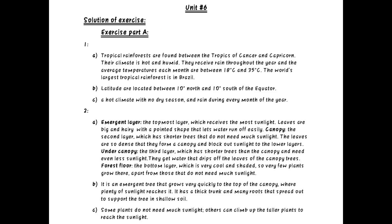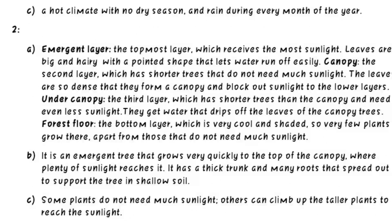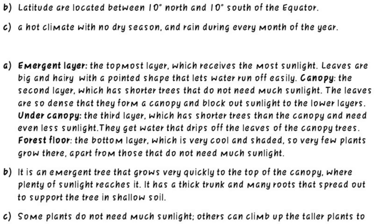Let's revise the layers. Emergent layer: the topmost layer which receives the most sunlight; leaves are big and hairy with a pointed shape that lets water run off easily. Canopy: the second layer with shorter trees that do not need much sunlight; leaves are so dense they block sunlight to the lower layers. Under canopy: the third layer with shorter trees than the canopy, needing even less sunlight; they get water that drips off the canopy leaves. Forest floor: the bottom layer, very cool and shaded, so very few plants grow there apart from those that do not need much sunlight.